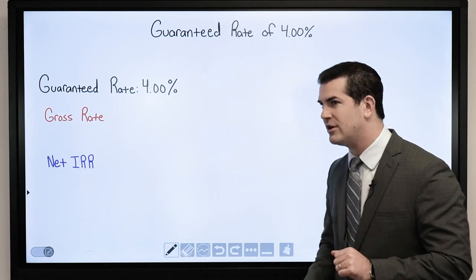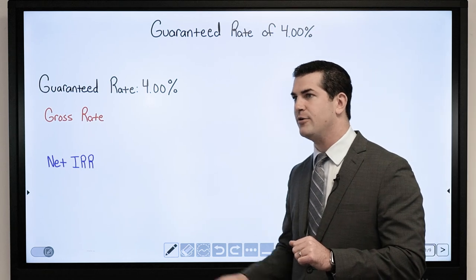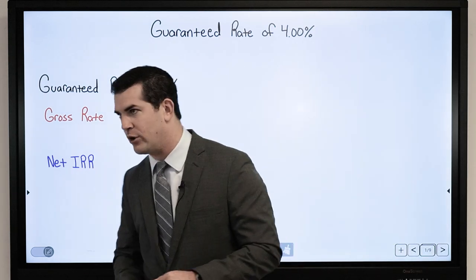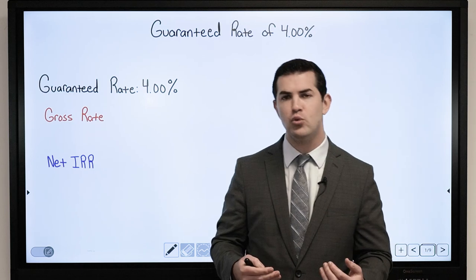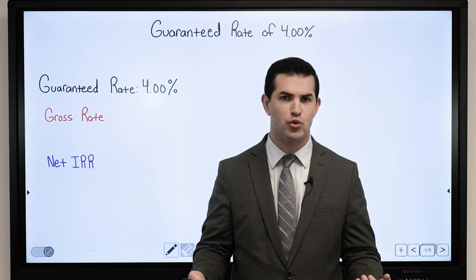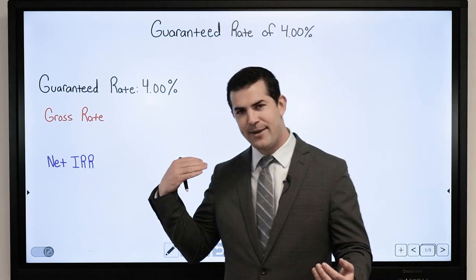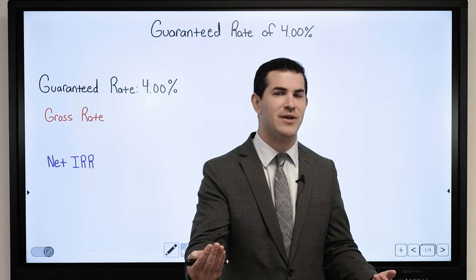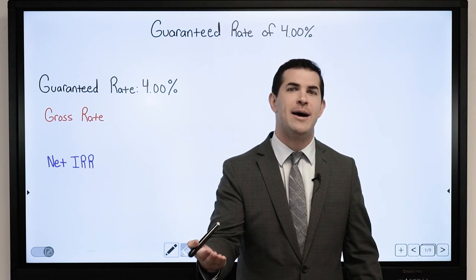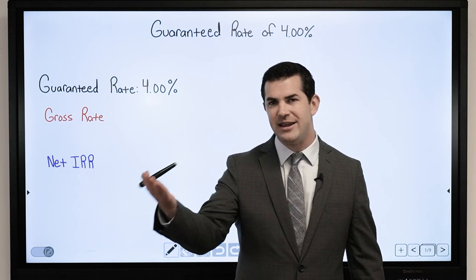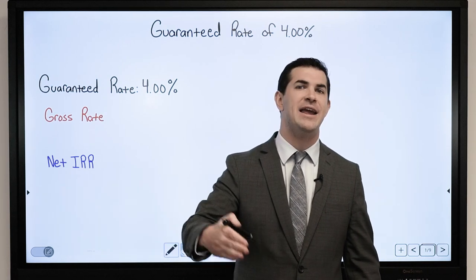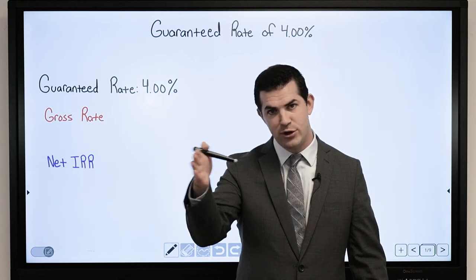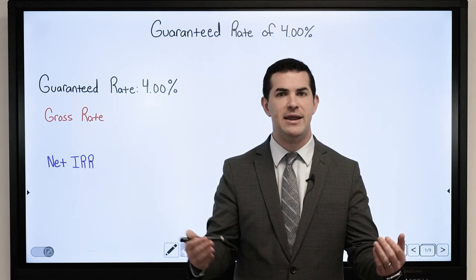What is important to look at here is my net internal rate of return, or IRR. What that shows is: when I pay money into a cash value life insurance policy, what am I earning each and every year? I have my annual internal rate of return — year over year, how much does it grow?